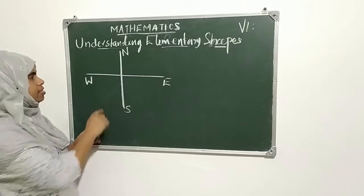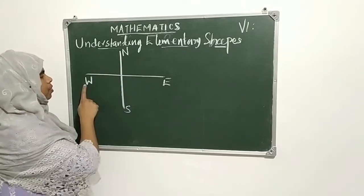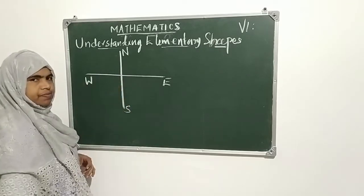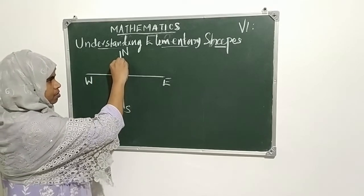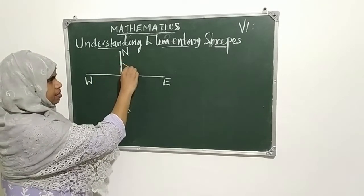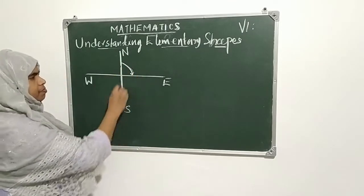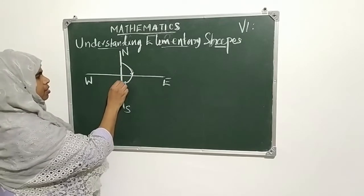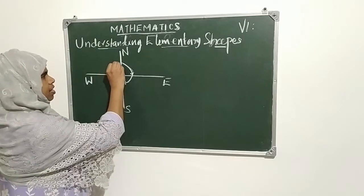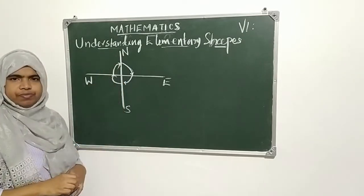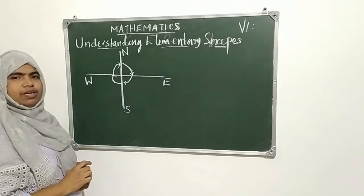See this — these are four directions. We know north, south, west, east. If we start from north, then east, then south, then west, and last reach north again — that is completing one round. This is called one revolution.